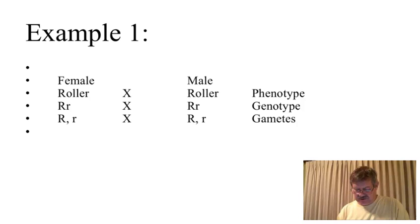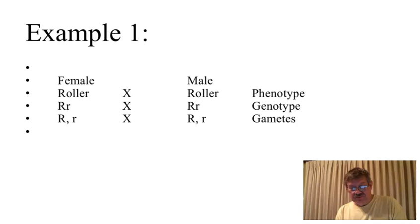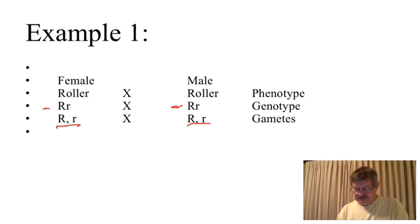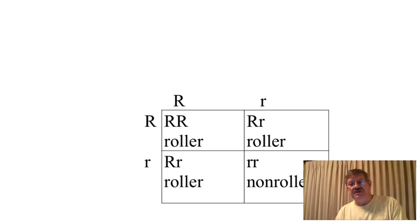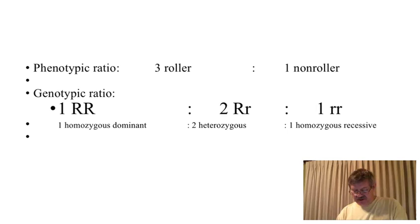Let's look at this example where both parents are able to roll their tongue and both parents are heterozygous. From that, we're going to get half the egg cells carrying big R, half carrying little r — same thing for the sperm cells. If we put that on a Punnett square, we have these possibilities: the children could be homozygous dominant, heterozygous, heterozygous, or homozygous recessive. From that we get our ratios.